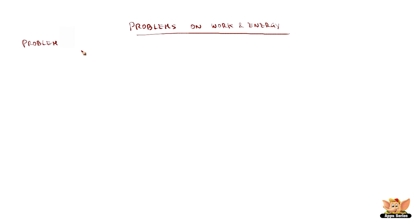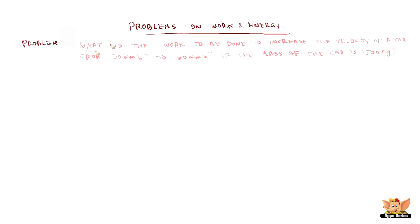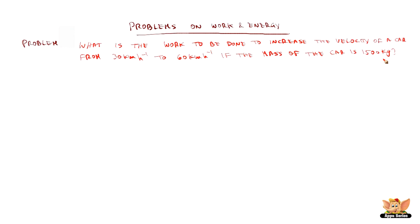Problems on Work and Energy. What is the work to be done to increase the velocity of a car from 30 km per hour to 60 km per hour, if the mass of the car is 1500 kg?